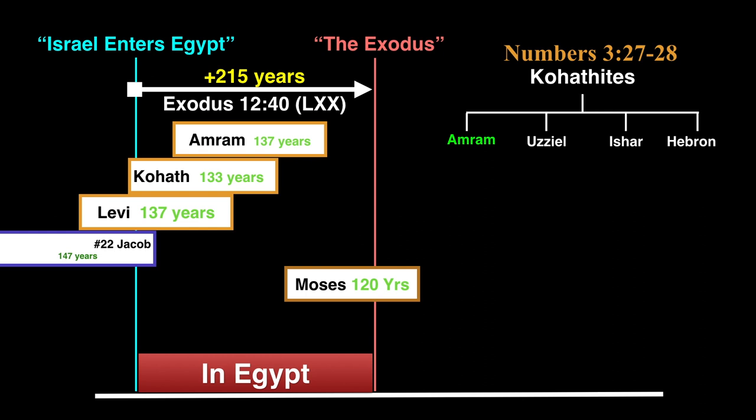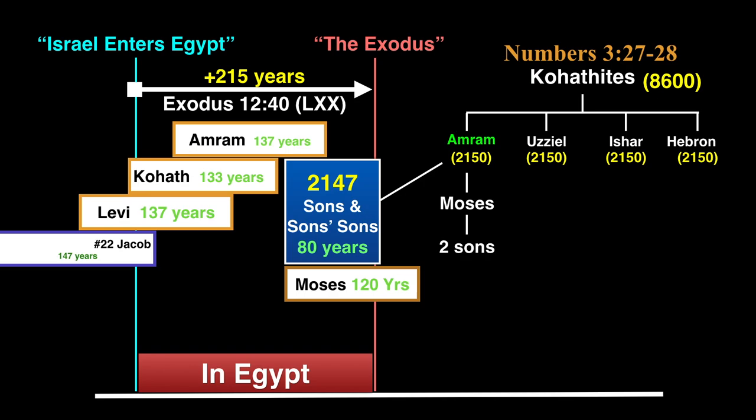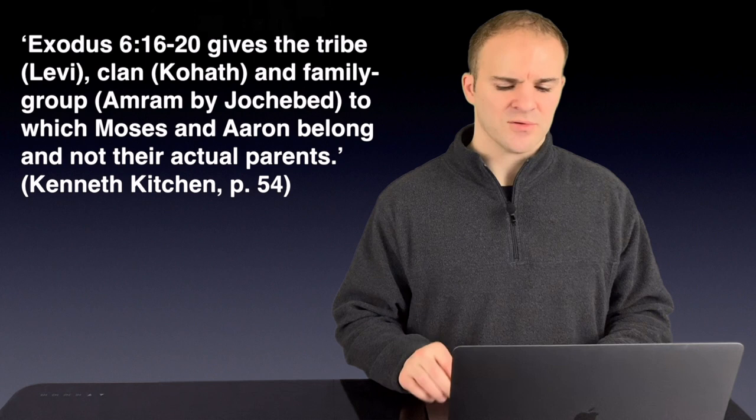But, a very strong population growth objection to the shorter view is that with the Amramites. Numbers 3:27-28 say that the Kohathites were divided in Moses' time into four branches. The Amramites, the Uzziolites, the Isharites, and the Hebronites, who consisted together of 8,600 men and boys. Now, if you were to divide this equally, each clan would have 2,150 men. And since Moses had a whopping two sons, that would mean that Amram, his dad, would have needed to have nearly 2,000 more sons and grandsons in only an 80-year period.